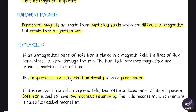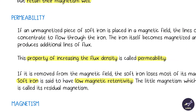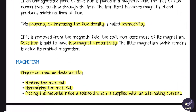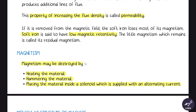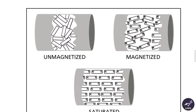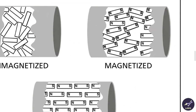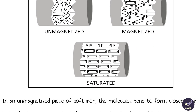The property of increasing the magnetic flux density is called permeability. Soft iron has low magnetic retentivity. Demagnetization can be done by placing the magnet inside a solenoid supplied with alternating current. The molecular structure of an unmagnetized material looks random; when magnetized it aligns, and when fully magnetized — saturated — it is fully aligned.